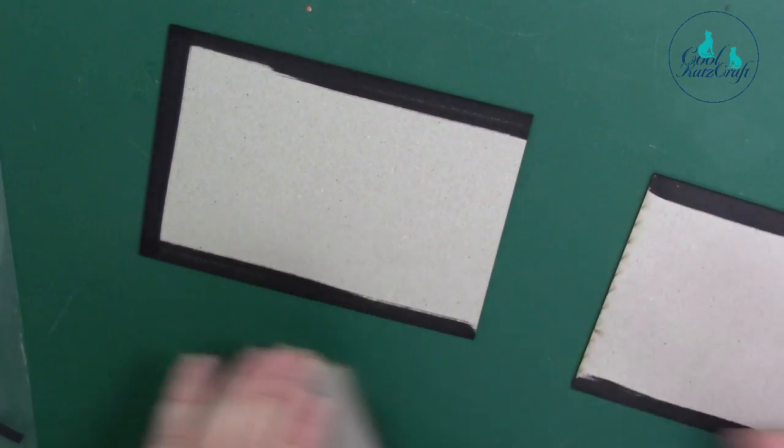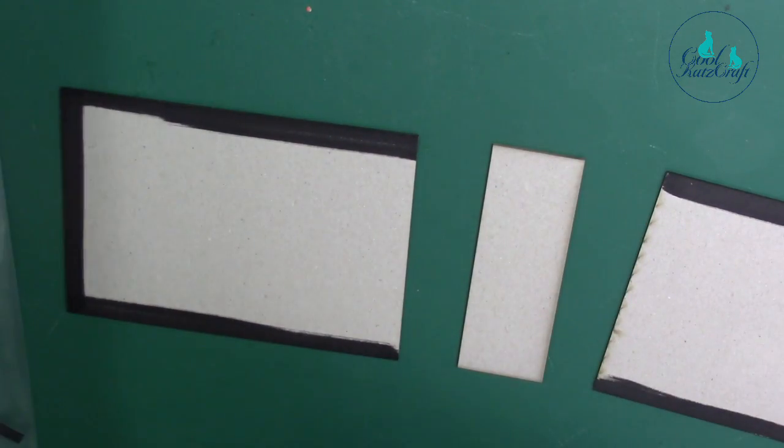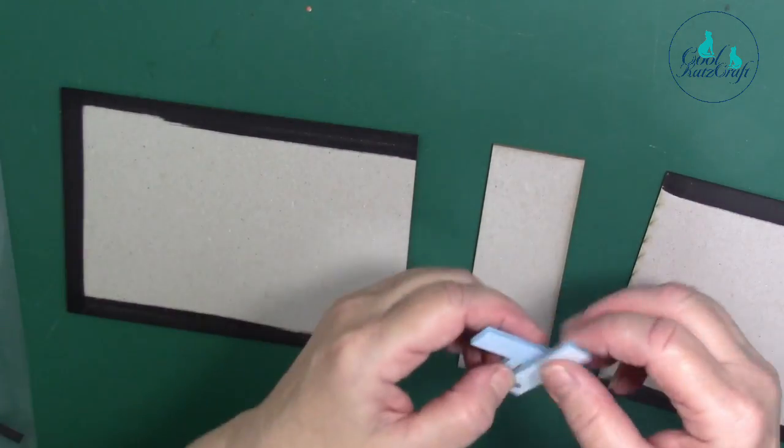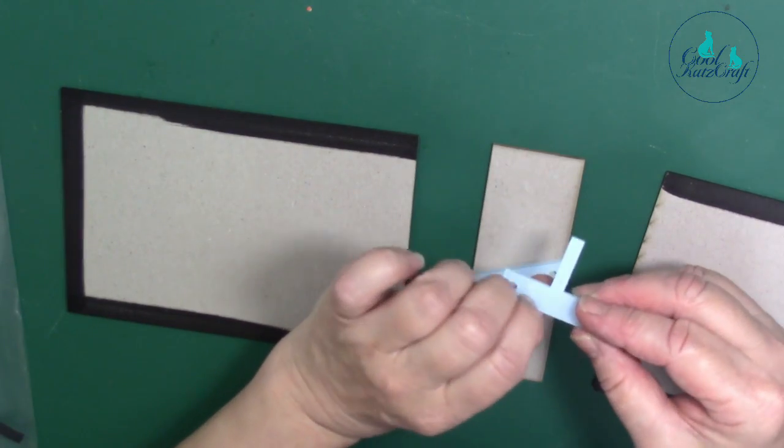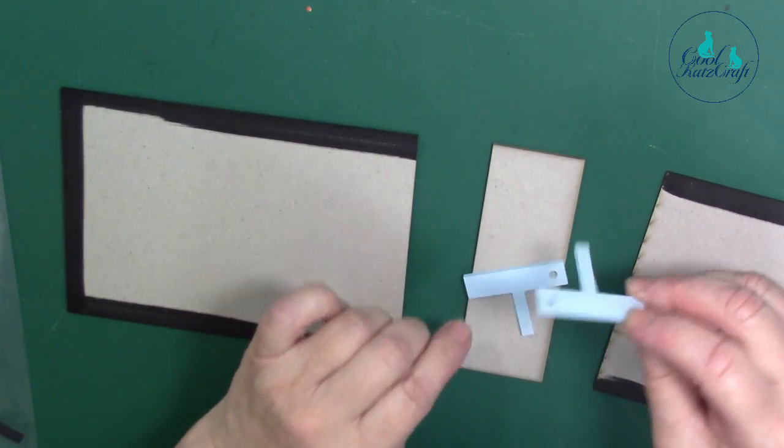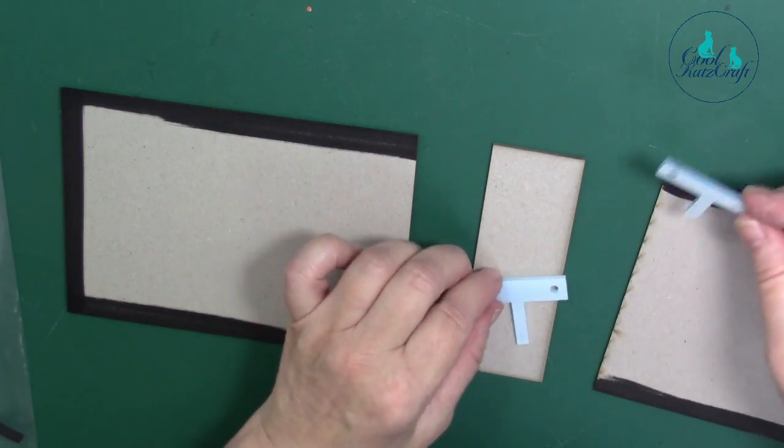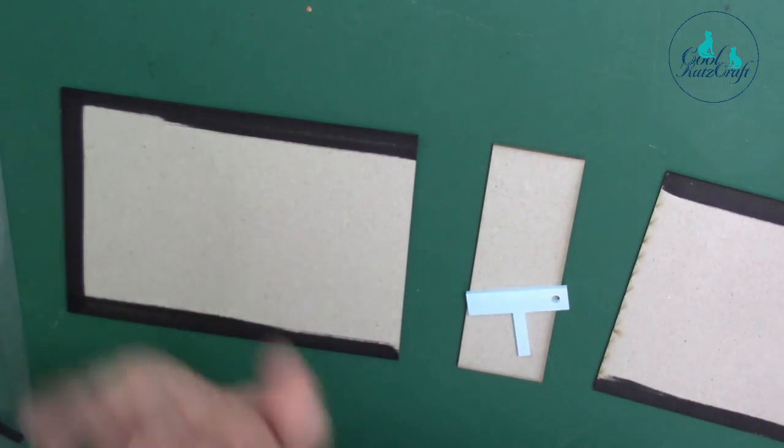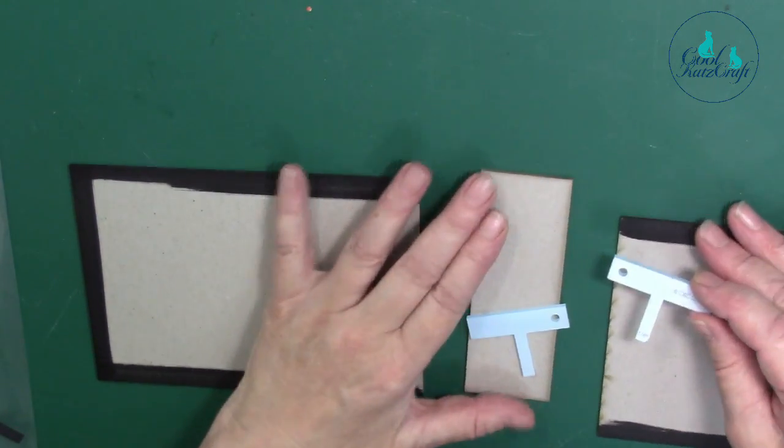I've used my quarter inch hinge spacers which are here, and I've actually left the protective covering on because I find it lifts off a bit easier from the Architape. You don't have to, you can just use the backing of the Architape and it'll work just as well.